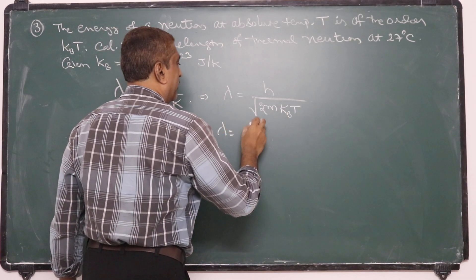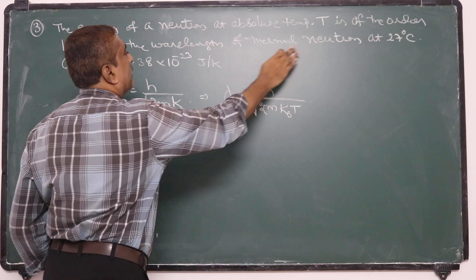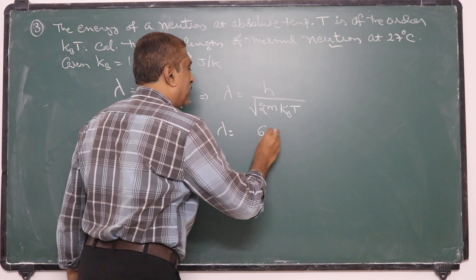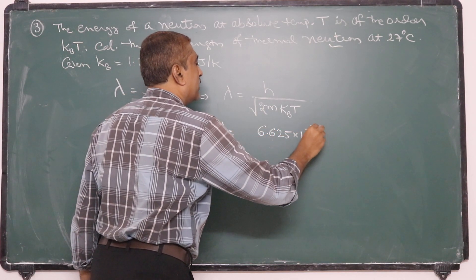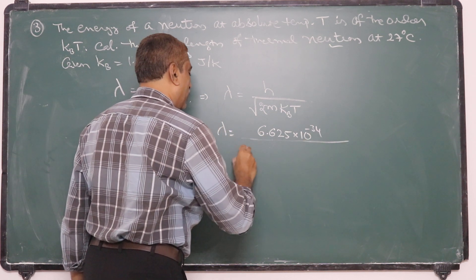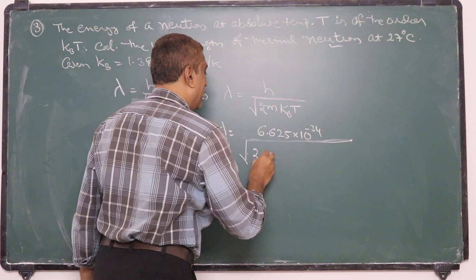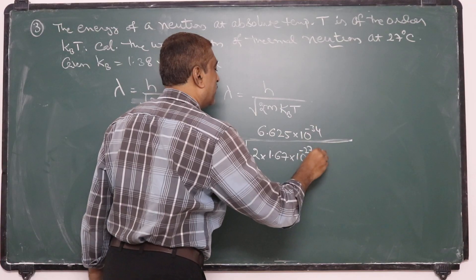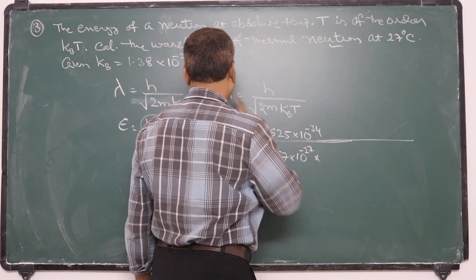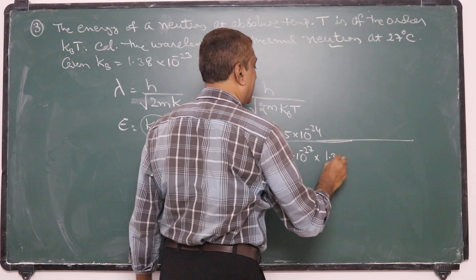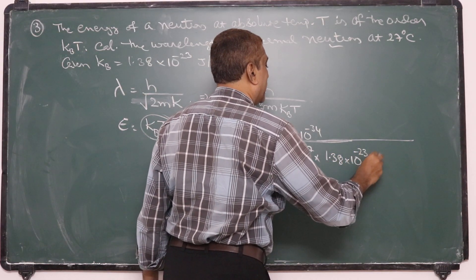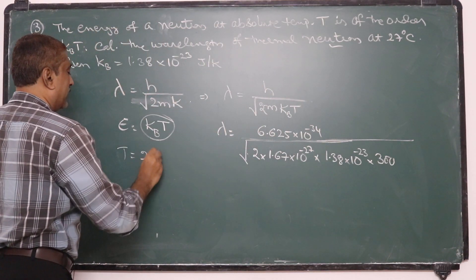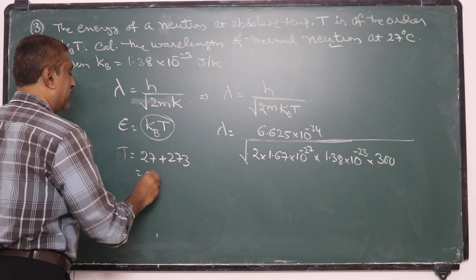Substituting values: M for neutron equals proton mass 1.67 × 10⁻²⁷ kg. λ = 6.625 × 10⁻³⁴ / √(2 × 1.67 × 10⁻²⁷ × 1.38 × 10⁻²³ × 300). The temperature T = 27°C + 273 = 300 K.